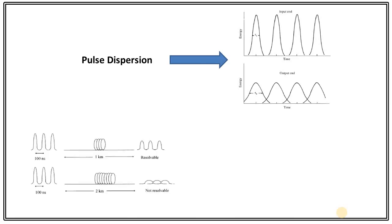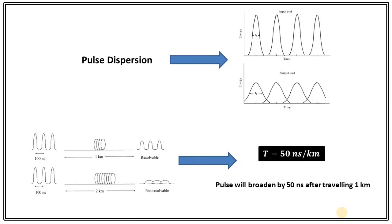For example, if two light pulses are separated by 100 nanoseconds, after 1 kilometer they disperse by 50 nanoseconds and still won't overlap — they can be resolved at the output. But if the fiber length is 2 kilometers, the dispersion becomes 100 nanoseconds. Since the pulses are separated by 100 nanoseconds, they will start overlapping and cannot be resolved. In that case, after each kilometer a repeater must be used, or the input pulses must be separated by a larger time gap for longer fibers. That is how the length of optical fiber and information sending capacity are decided by pulse dispersion.